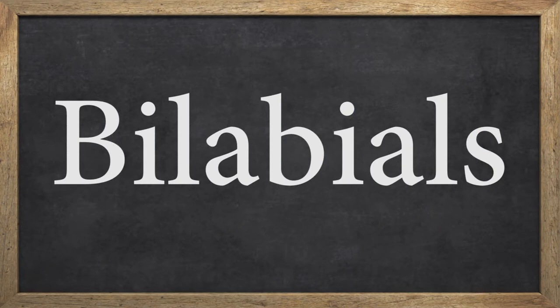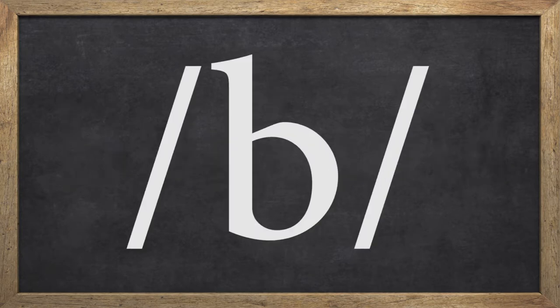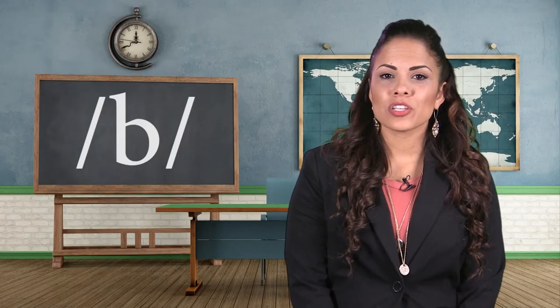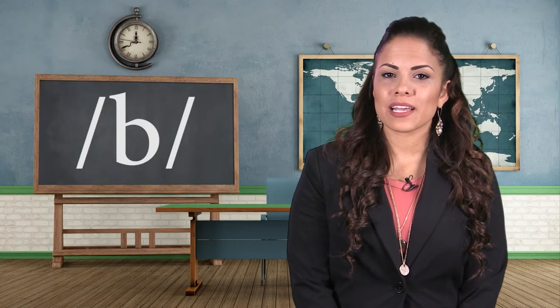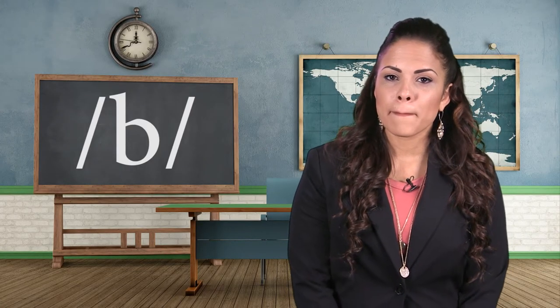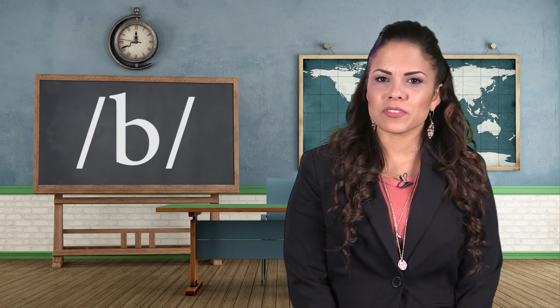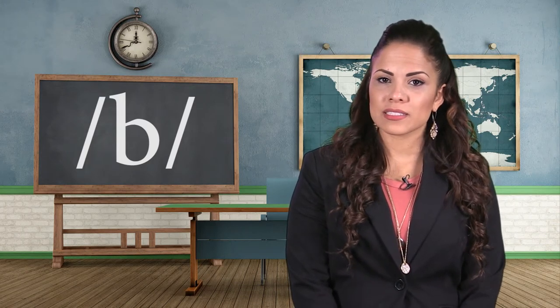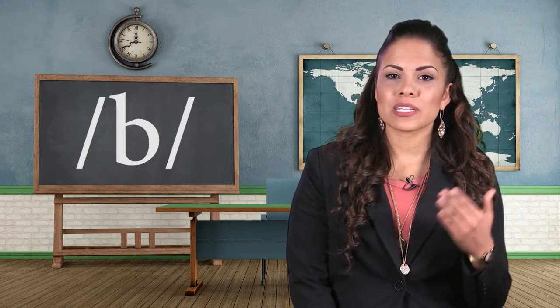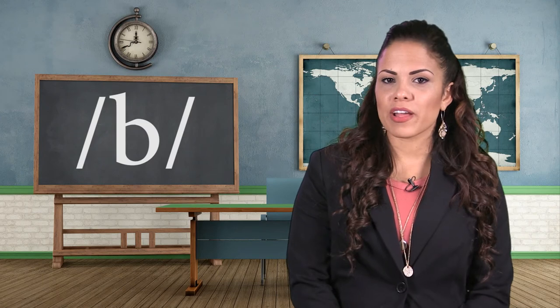The first type of consonant sounds we will cover are bilabials. To produce bilabial consonants, you must bring your lips together. The first bilabial sound is /b/. To produce /b/, you must bring your lips together. B is special because sometimes it can be silent, especially when it's at the end of a word after the letter M.